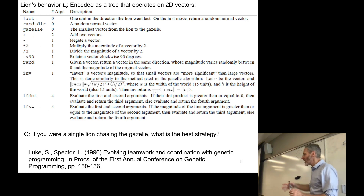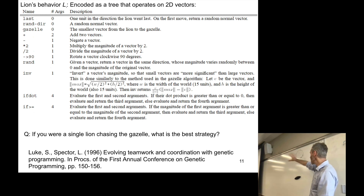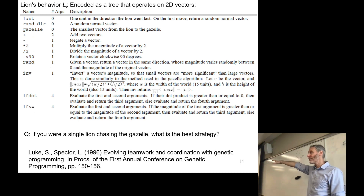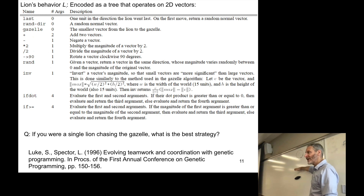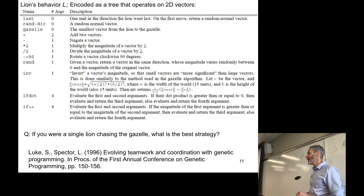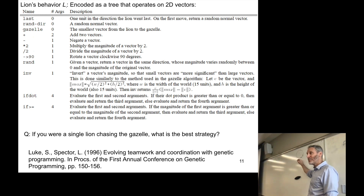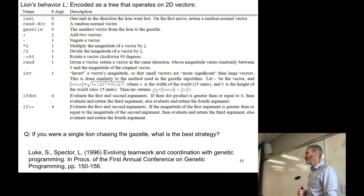We create a population of trees, drop each tree onto the pride of lions, observe how well the pride does, delete the low-fitness trees, replace them with randomly modified copies of the survivors, and repeat for tens, hundreds, or thousands of generations. Then we take the highest-fitness tree, play it back, and see how well the lions actually do at capturing the gazelle.